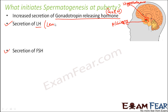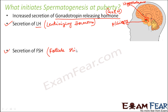LH is luteinizing hormone, and FSH is follicle stimulating hormone — we have discussed both in class 11. When the gonadotropin releasing hormone is released from the hypothalamus, it sends a signal to the anterior pituitary to release LH and FSH.